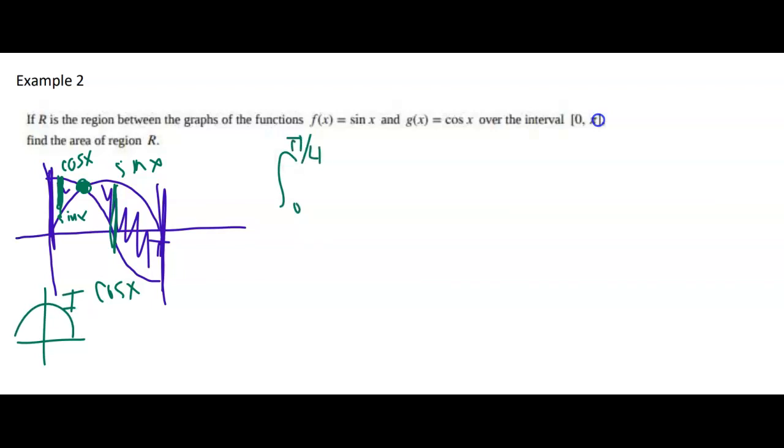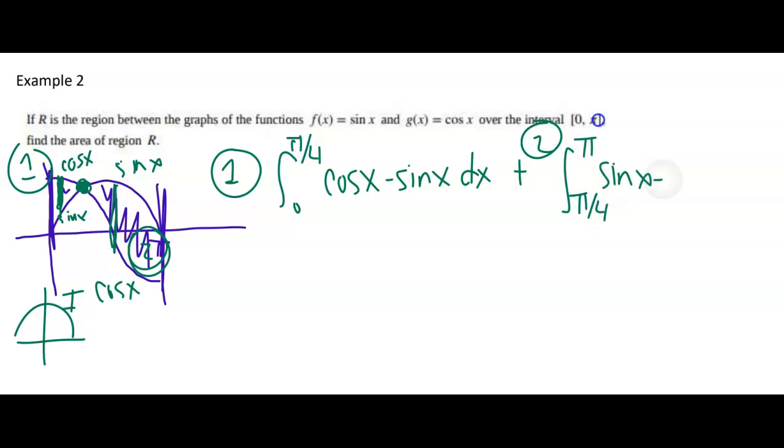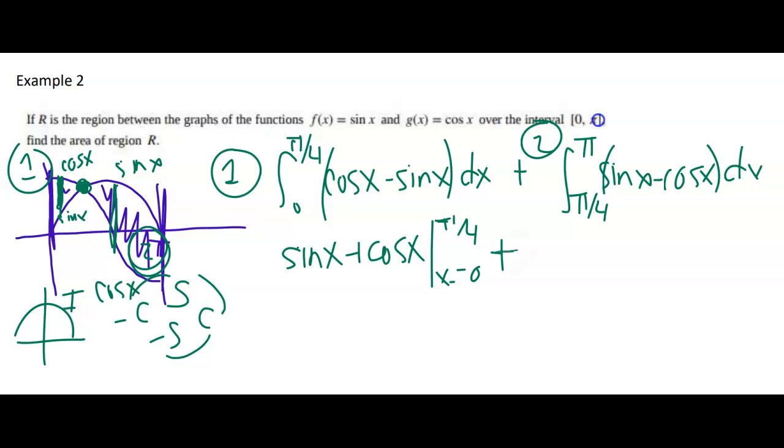So integral from zero to pi over four of cosine x minus sine x dx. That's area one, if you will. Area two is the integral from pi over four to pi of sine of x minus cosine of x dx. No algebraic manipulation needs to happen ahead of time. I just need to take anti-derivatives. I'm going to use my little circle cheater. Anti-derivative of cosine is sine of x. Negative sine is positive cosine of x from x equals zero to pi over four plus anti-derivative of sine is negative cosine. Anti-derivative of negative cosine is negative sine from x equals pi over four to pi.